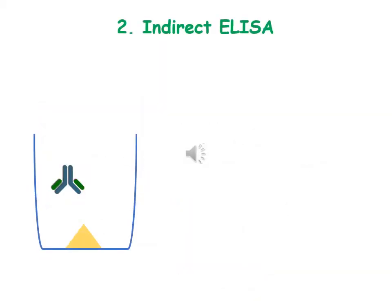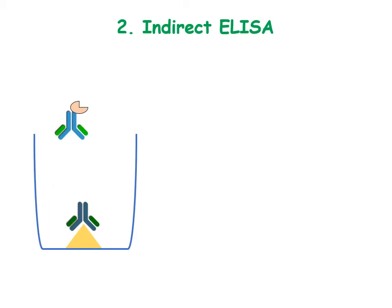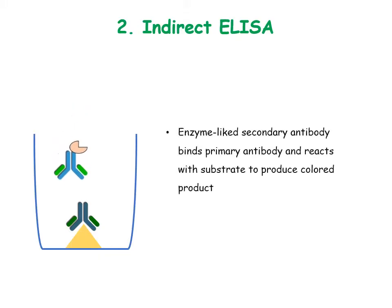In indirect ELISA, the compound is attached to the plate. Primary antibody is added which binds to the compound, and a wash is given. Secondary antibody, which is linked to the enzyme, is added and binds to the primary antibody. Again a quick wash is given, and then substrate is added which is converted to the colored product by the enzyme.